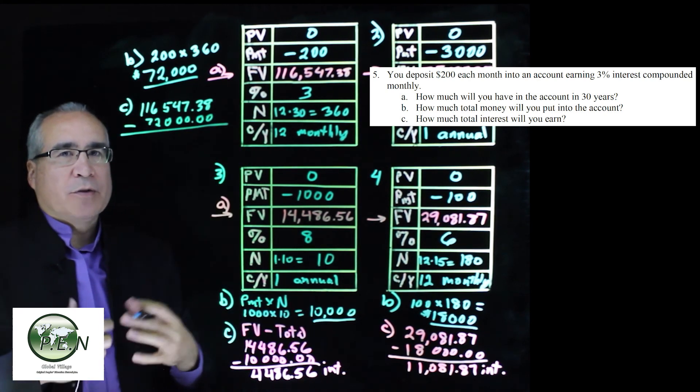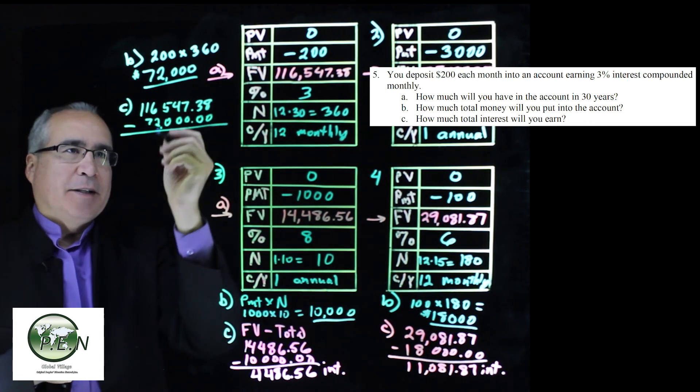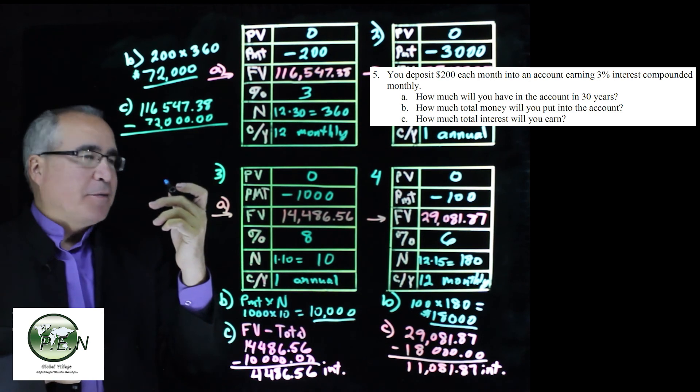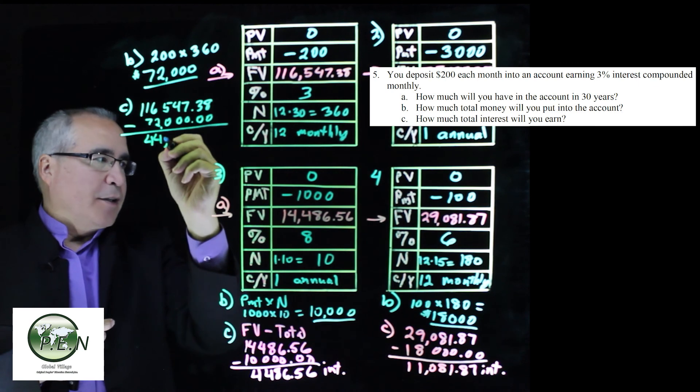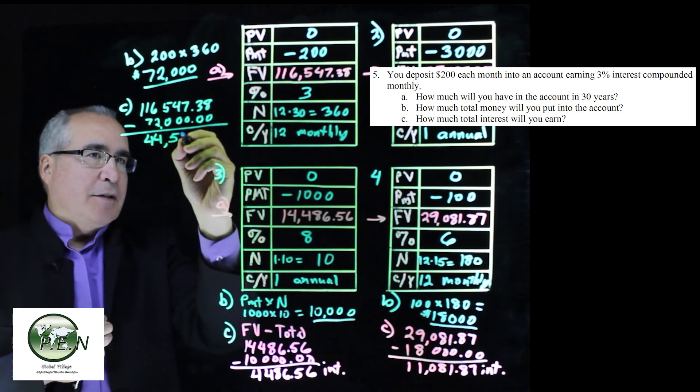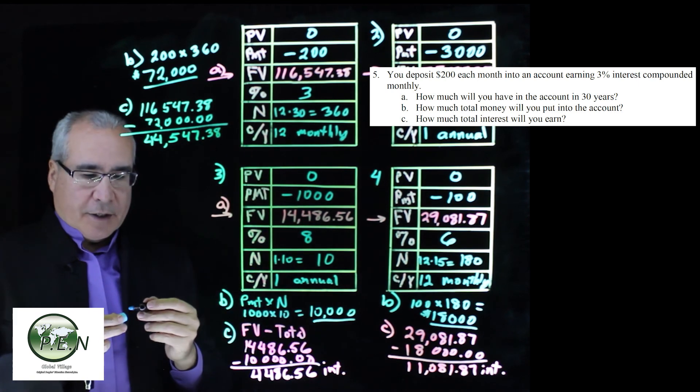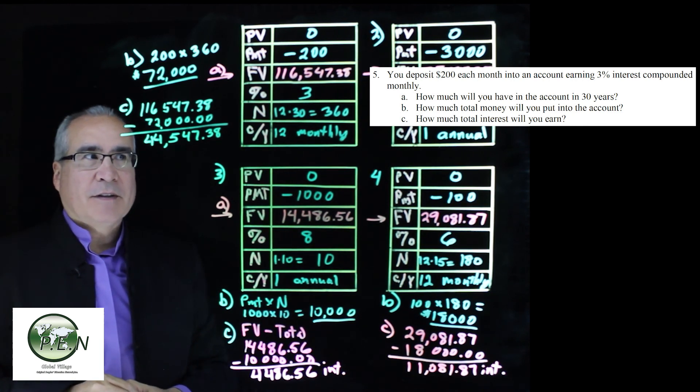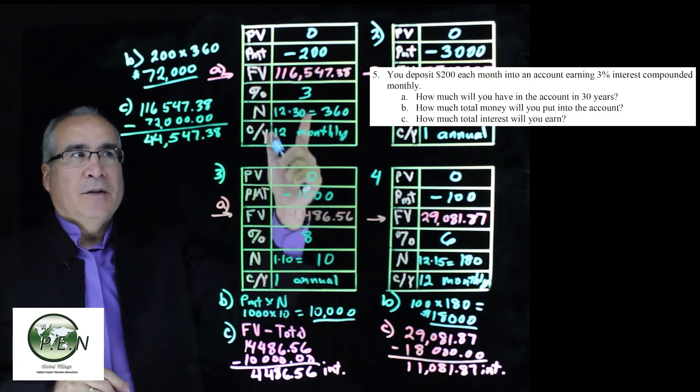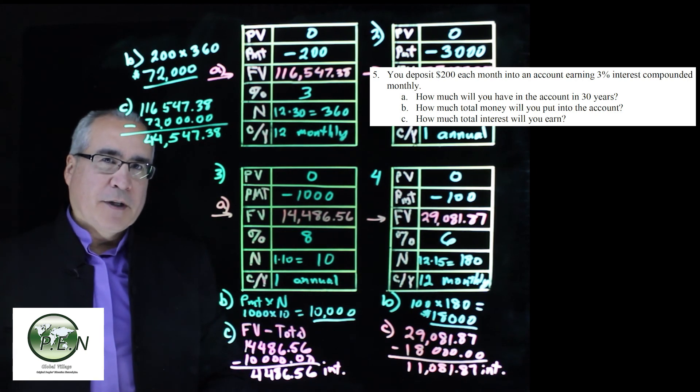And this will give us how much we earned. Again, at 3%, it's not amazing stuff, but it's not bad either. We ended up earning $44,547.38 over those 30 years. Better than burying the money in the ground under a tree or something, right? So that's how we calculate annuity values, and then also figure out how much interest we earn from an investment.